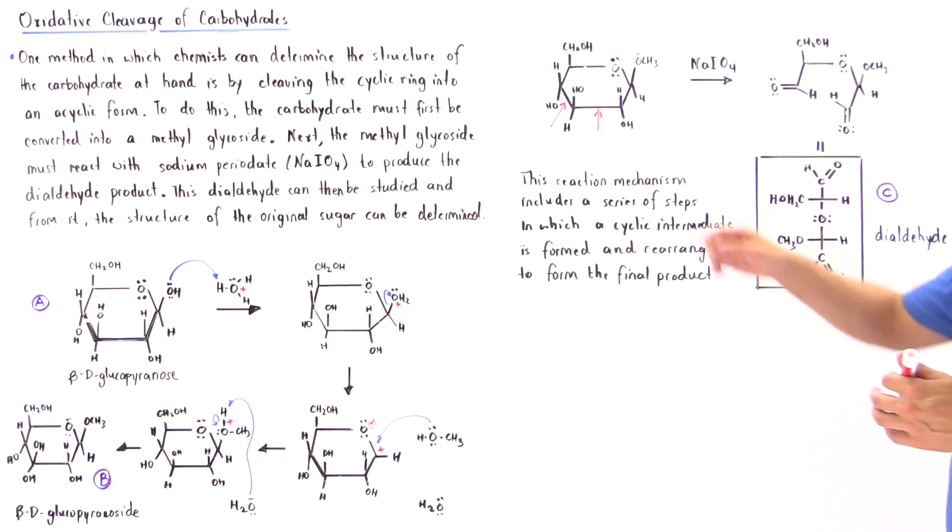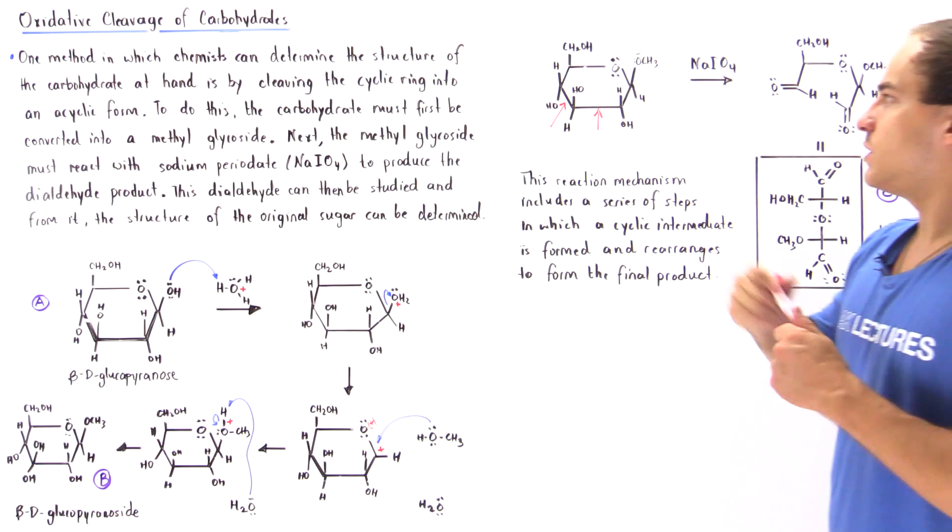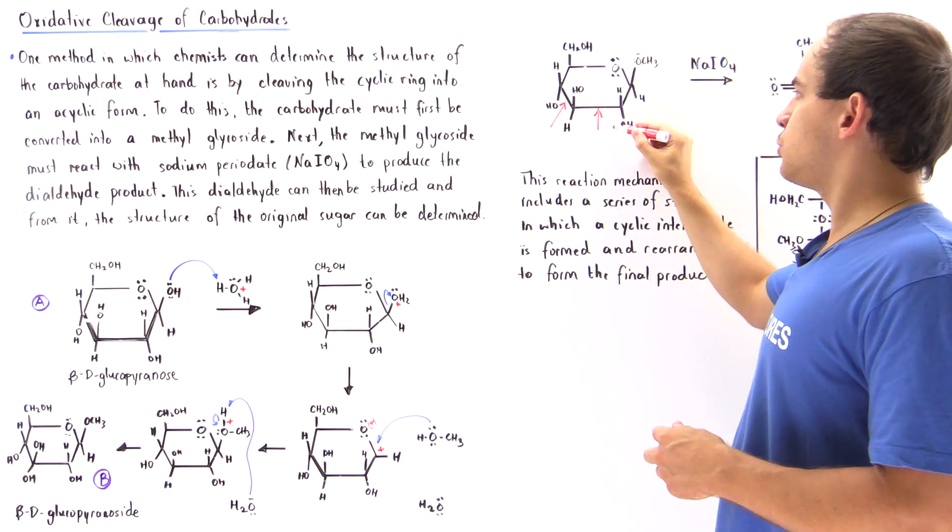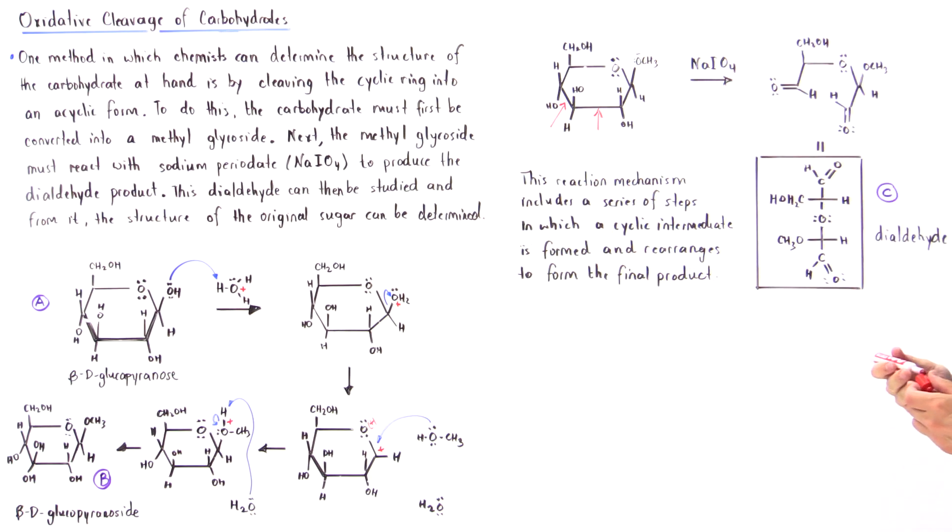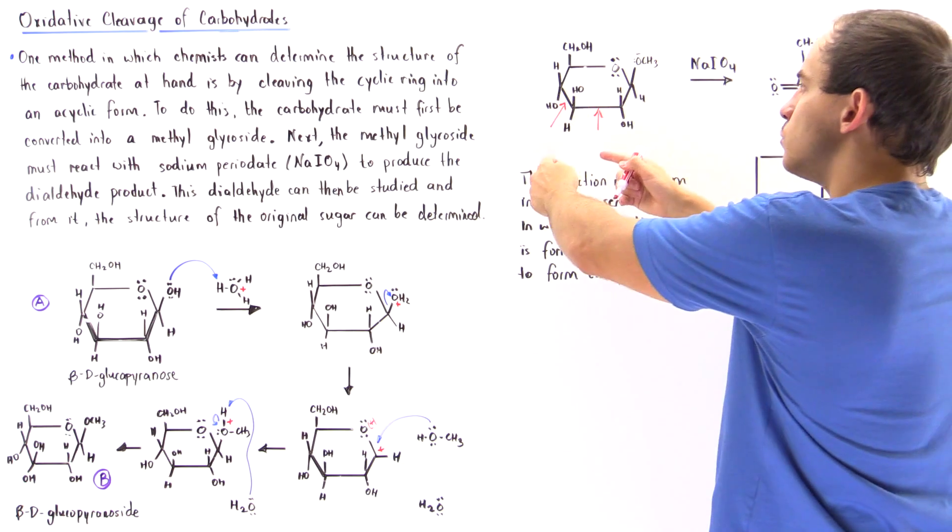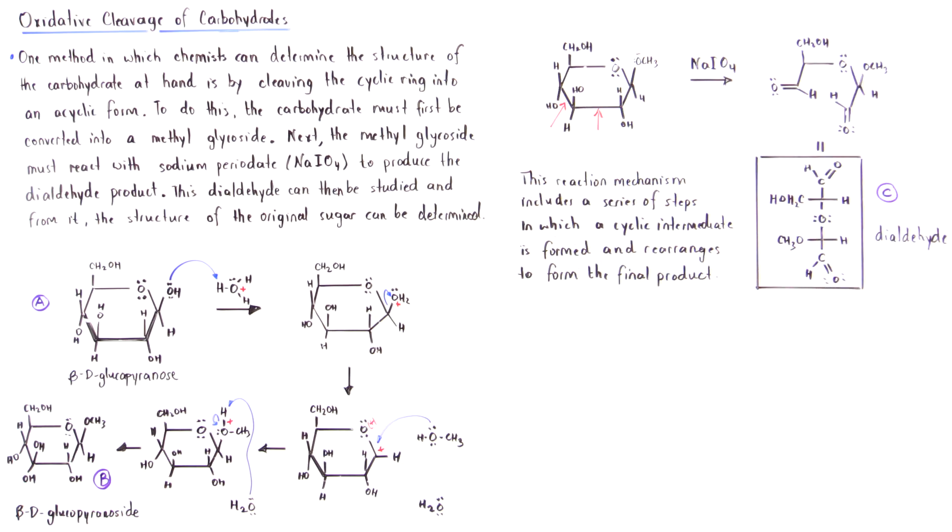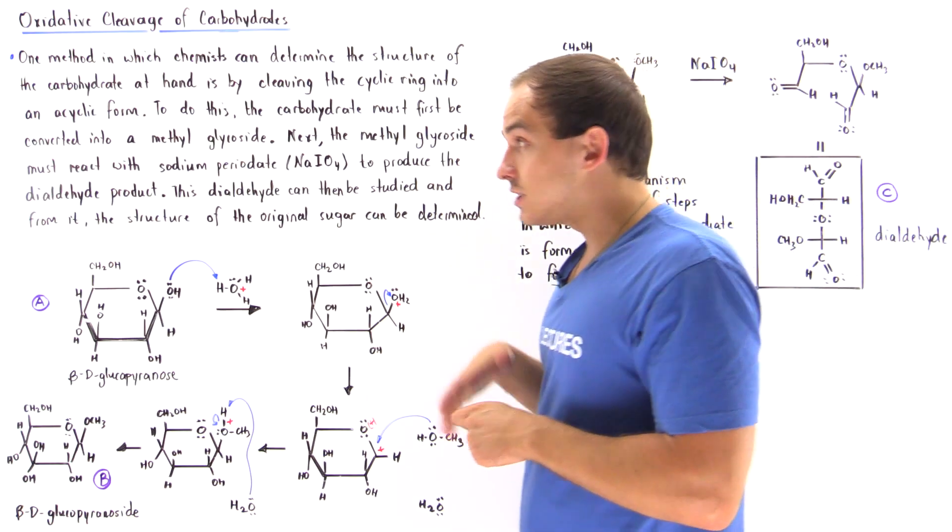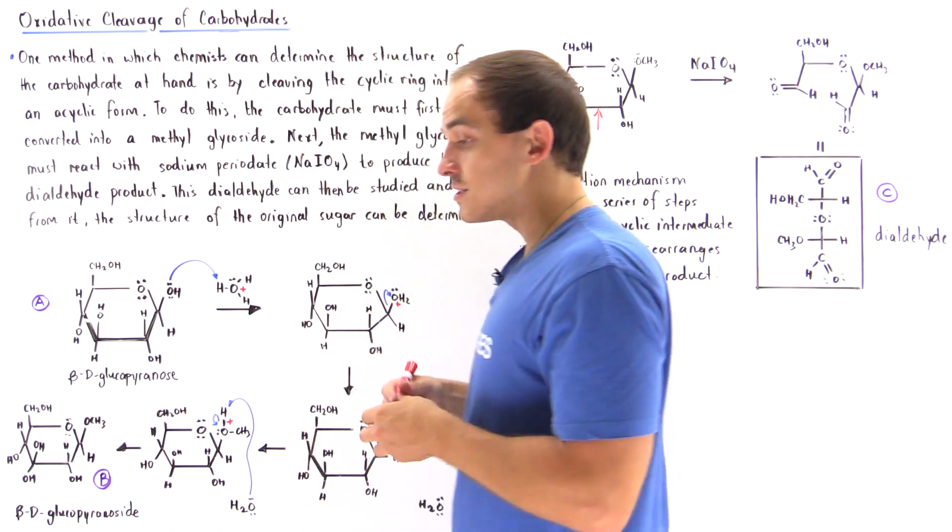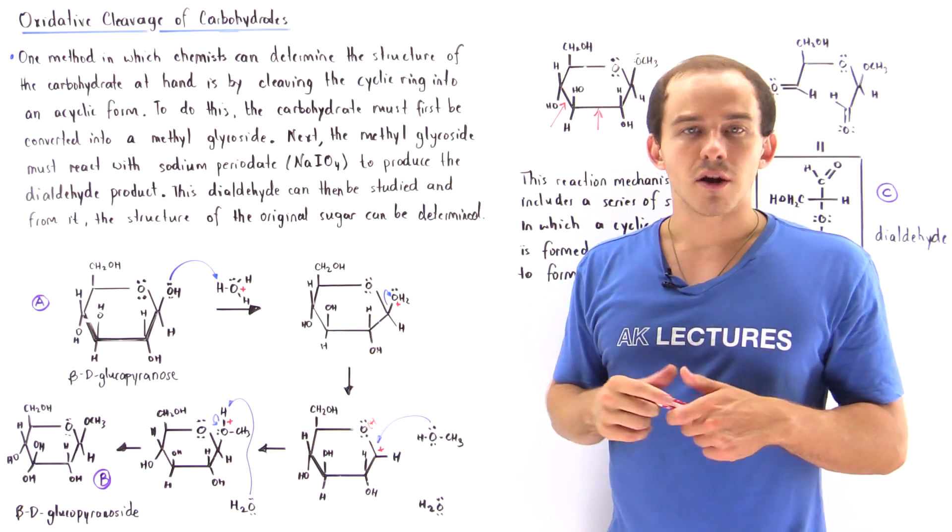Alcohols that contain more than one OH group, as in this case. So basically, we have our 1,2-diol that react with this sodium periodate to cleave these two bonds. This basically goes away and we produce this final product, our dialdehyde. And this process by which we cleave our carbohydrates to study them is known as oxidative cleavage of carbohydrates.